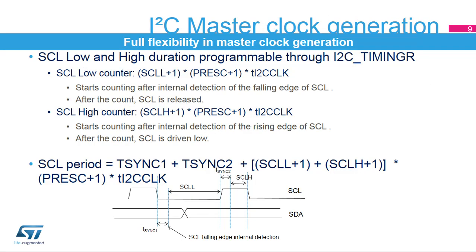The I2C master clock's low and high-level durations are configured by software in the I2C timings register. The SCL low and high-level counters start after detection of the edge of the SCL line. This implementation allows the peripheral to support the master clock synchronization mechanism in a multi-master environment as well as the slave clock stretching feature. Therefore, the total SCL period is greater than the sum of the counters, linked to the added delays due to internal detection of the SCL line edge. These delays, T-SYNC-1 and T-SYNC-2, depend on the SCL falling or rising edge, the input delay due to the filters, and the delay due to internal SCL synchronization with the I2C clock.